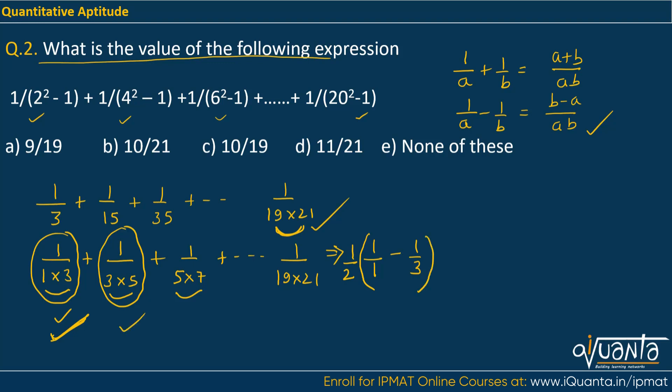Then if I talk about the next term 1/(3×5), I can write it as (1/2)(1/3 - 1/5). In the numerator we'd be getting 2, but we only had 1/(3×5), so to cancel that 2 I multiply by 1/2. Similarly with every term I multiply by 1/2. The last term would be (1/2)(1/19 - 1/21).